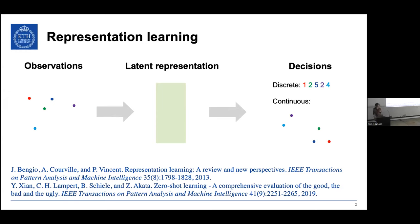The alternative is to have systems that are specialized in one certain task, such as image recognition, where you train a system to classify a given number of classes, which it can of course be very good at. But the downside is that it has crammed for the exam, so to speak. It can do nothing else than exactly the task it was trained for.